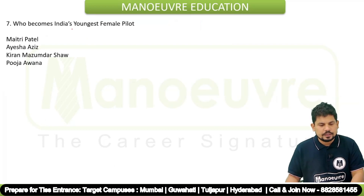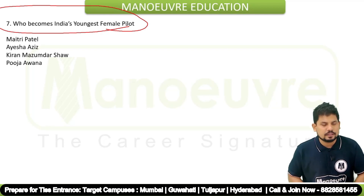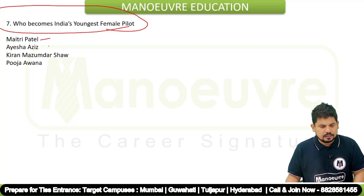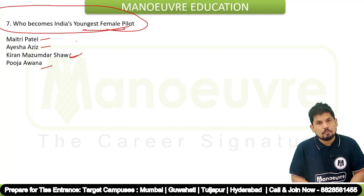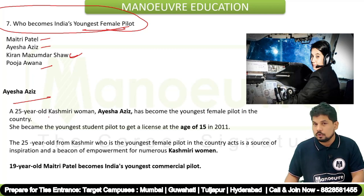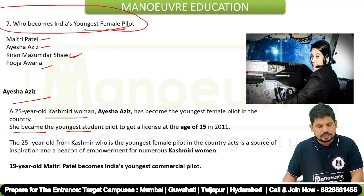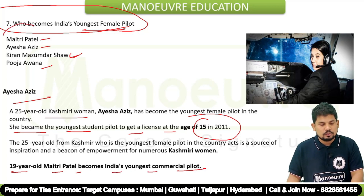Who became India's youngest female pilot? The options are Maitri Patel, Isa Aziz, Kiran Mazumdar Shaw, and Pooja Awana. The correct answer is Isa Aziz, a 25-year-old Kashmiri woman. She also holds the record of becoming the youngest student pilot to get a license at the age of 16 in 2011. Additionally, 19-year-old Maitri Patel became India's first youngest commercial pilot — remember both names.